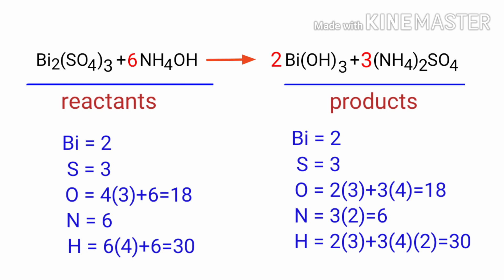There are 2 bismuth atoms, 3 sulphur atoms, 18 oxygen atoms, 6 nitrogen atoms and 30 hydrogen atoms on both sides.